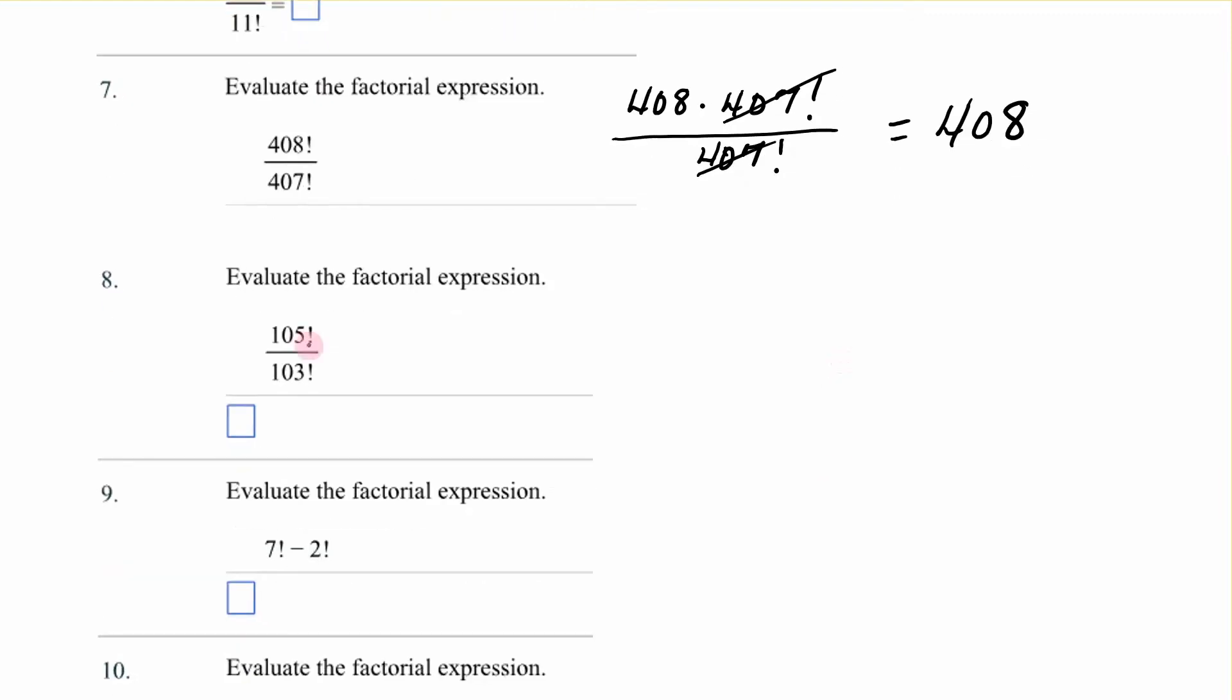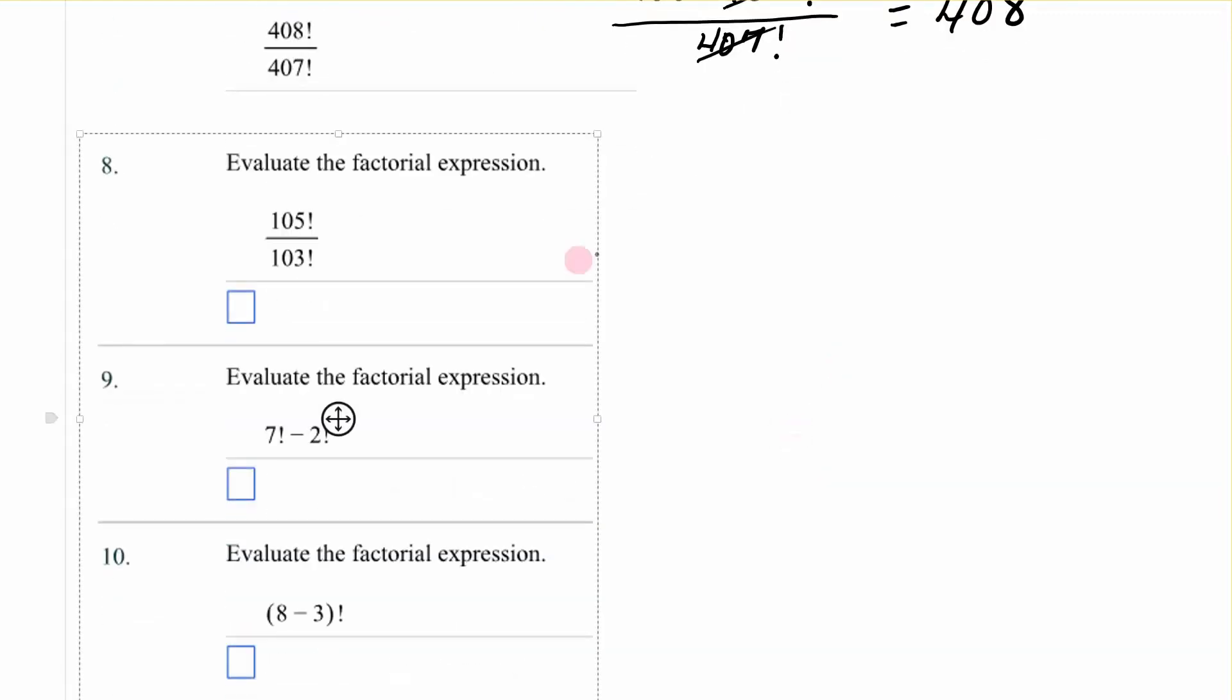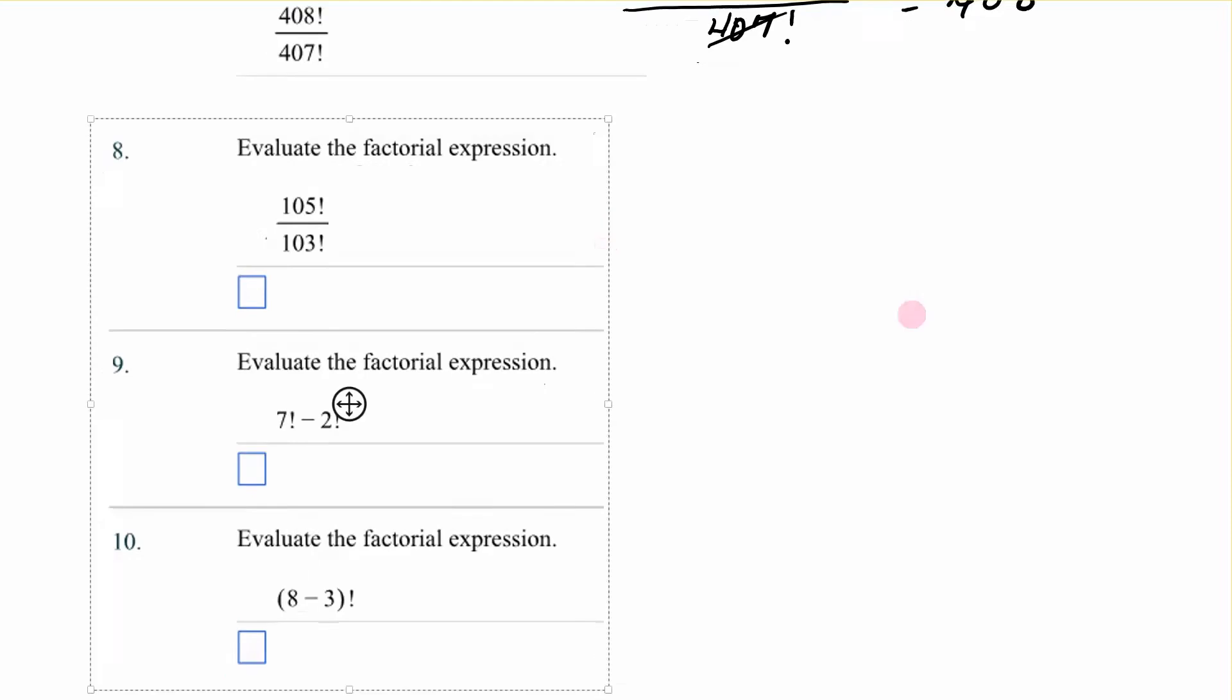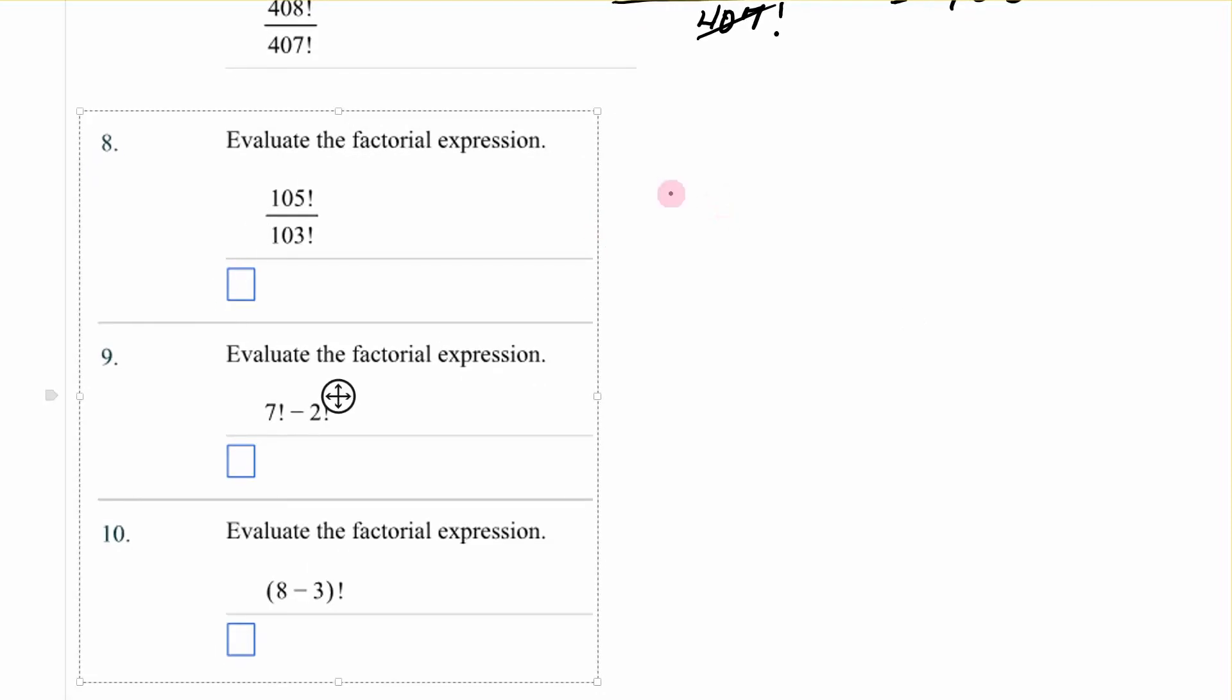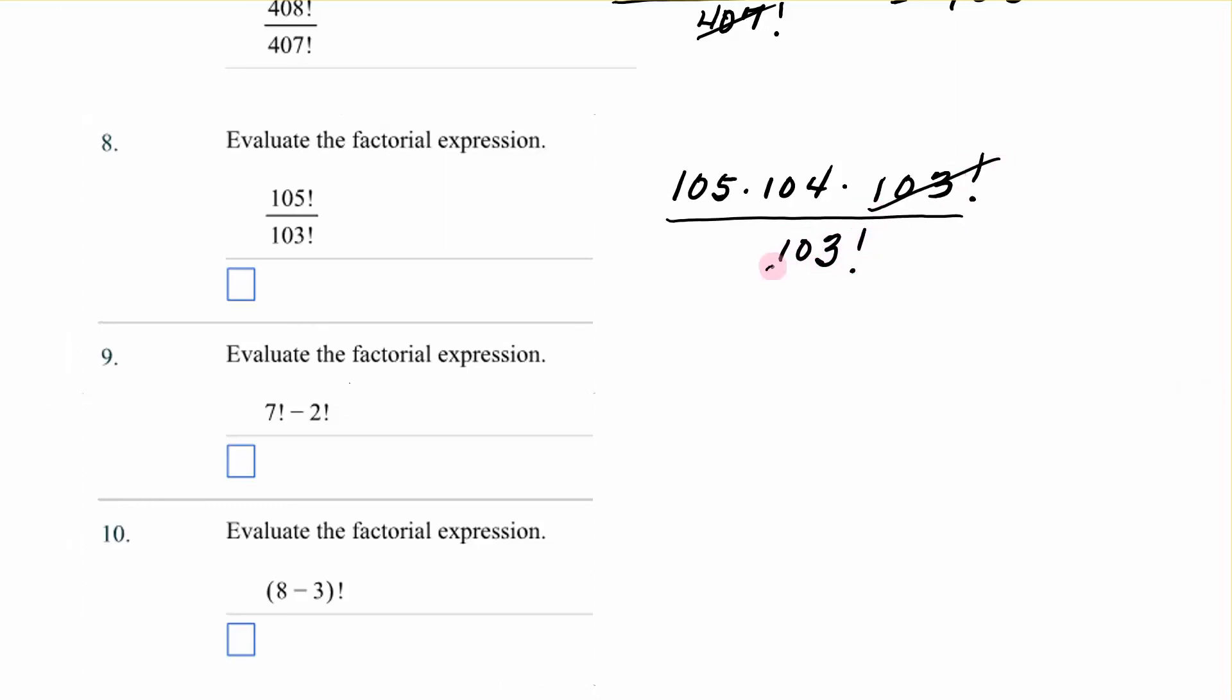The next one. 105 factorial over 103 factorial. All right. So that is 105 times 104 times 103 factorial over 103 factorial. And if I multiply those two, I get 10,920.